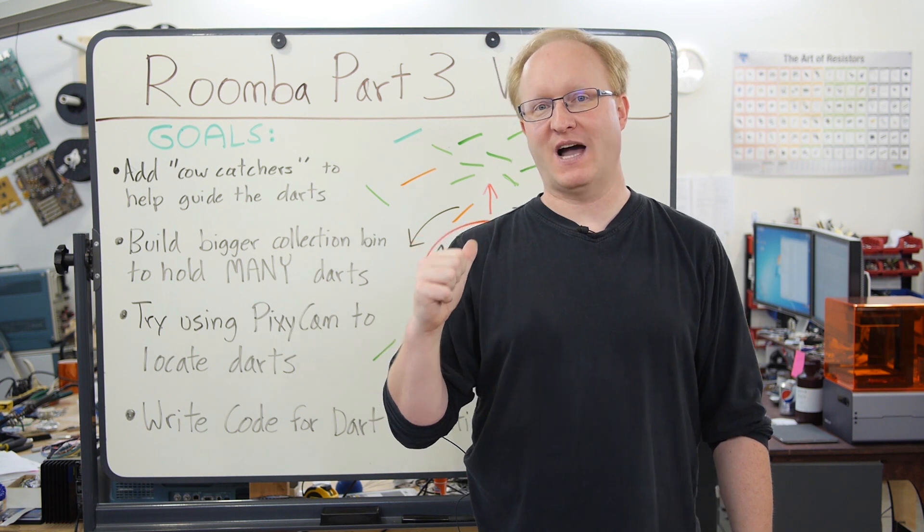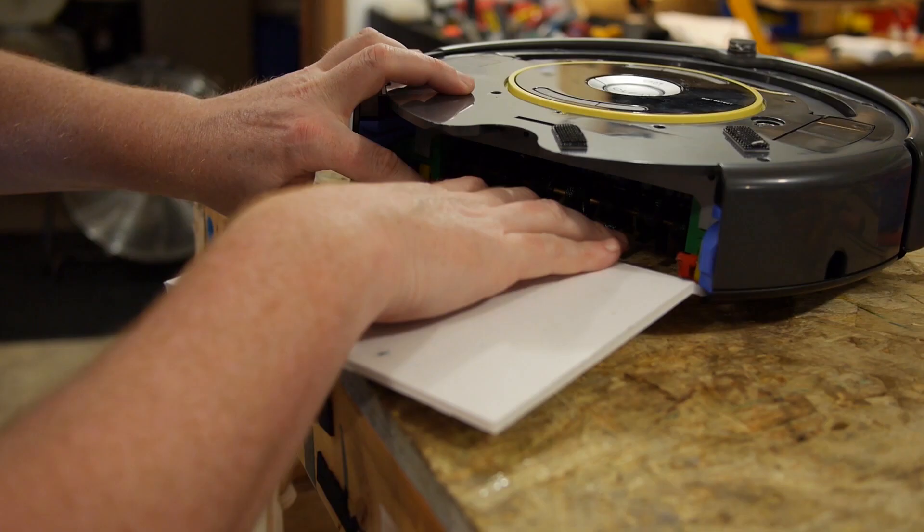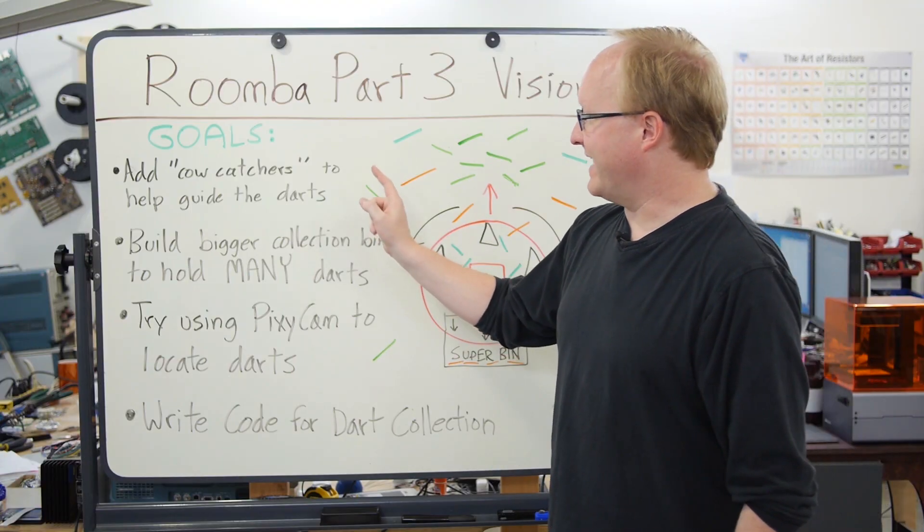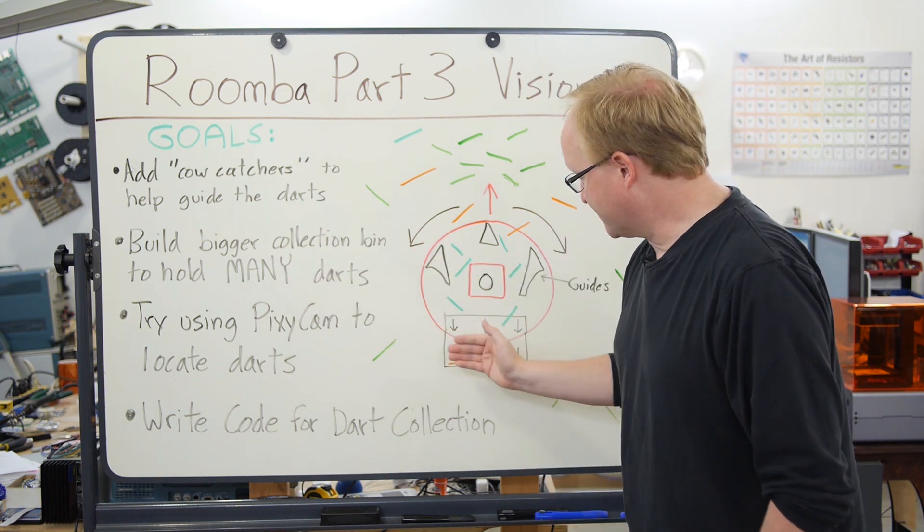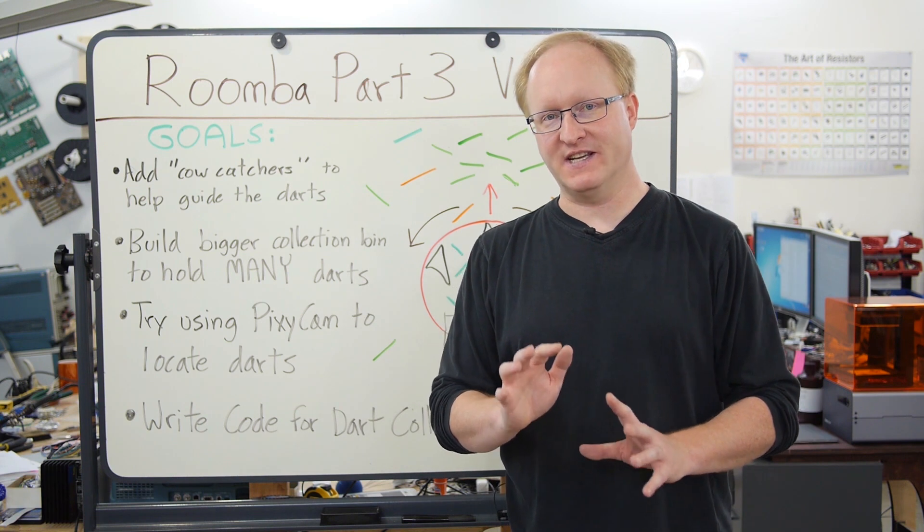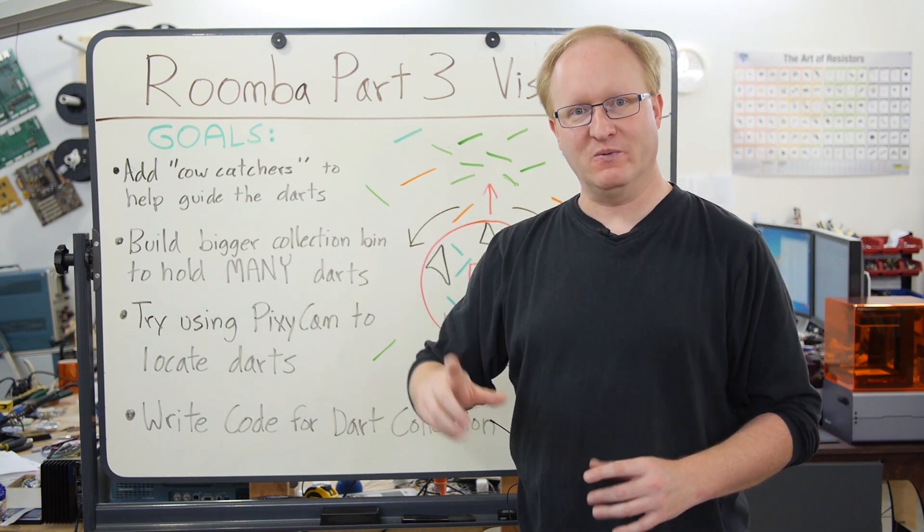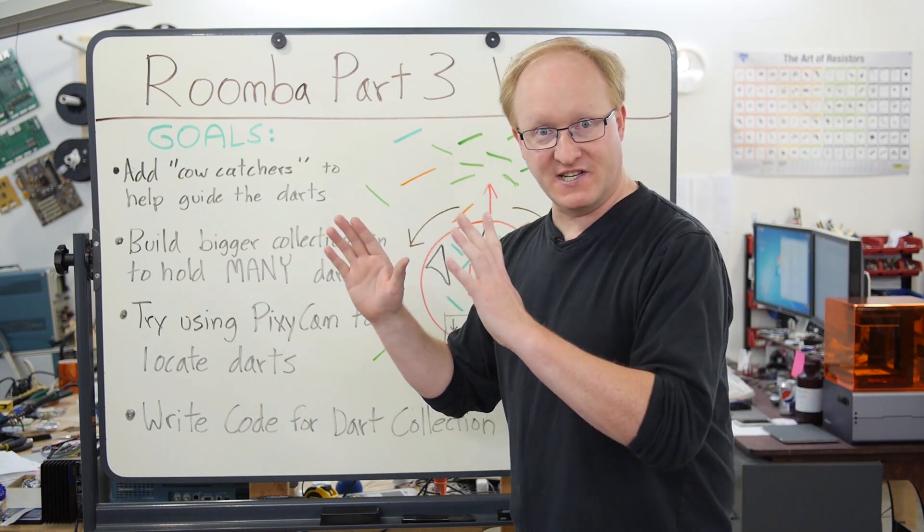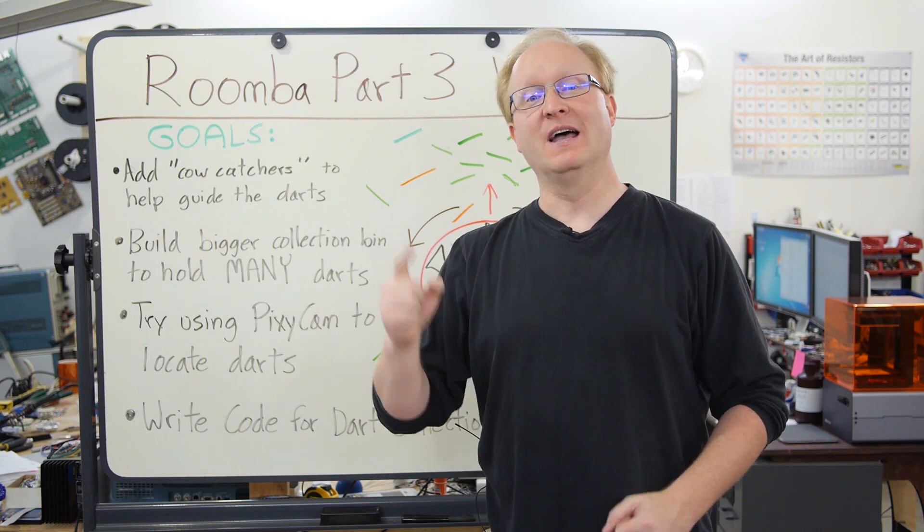Hello and welcome back to The Ben Heck Show. In today's episode, we're going to be finishing up the iRobot Create 2 based project that we started a few weeks ago. In previous episodes, we learned how to communicate with the Roomba. Then in part two, we made a custom brush that would suck up Nerf darts to clean up after a battle. And in today's episode, we're going to finish things off. First, by adding cow catchers to help guide the darts into the brushes. Then we're going to build a bigger collection bin to hold many darts. Also, the bigger the bin is, the less chance of the darts falling back out. Then we're going to try using the Pixie Cam to locate darts. The Pixie Cam is a Kickstarted color-based image-sensing camera that we got off Kickstarter a few years ago. And we used it on our auto-tracking camera. We're going to try it here to try to find the colored darts. Then we're going to write code for dart collection. Basically, the Roomba will look around. If it sees a colored dart, it'll drive over to it, suck it up, and then look for some more. And then if enough time passes, it'll give up and go back to its charging station. Let's get started.